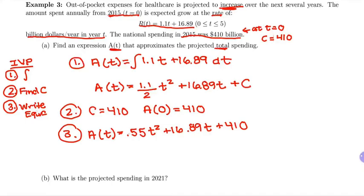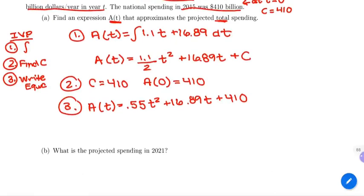So again, how you check an initial value is you take the derivative of it. Make sure you get back to this right up here. And you can plug in A of 0 to make sure you get 410 out for that initial value. You have two things to check. You take the derivative and plug in 0.